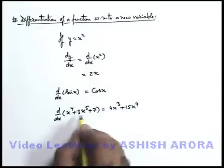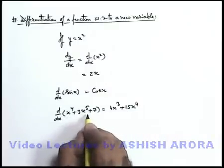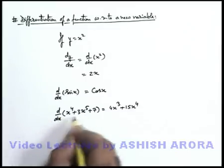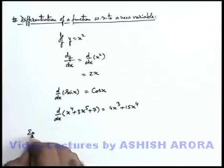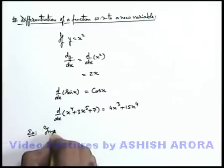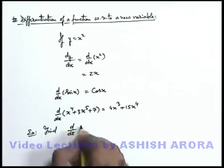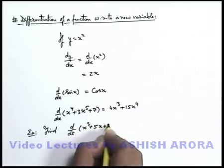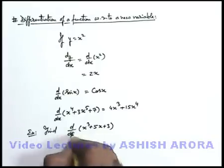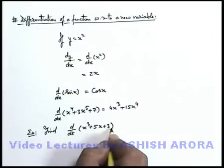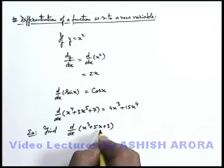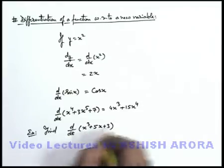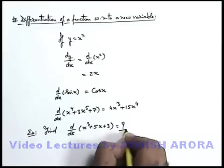The problem will arise when the given function is in terms of a variable x, and we are required to differentiate it with respect to some other variable. For example, if we are required to find d/dt of x³ + 5x + 3, we certainly cannot differentiate it directly because the function is in terms of x but we are required to differentiate with respect to t. Let's see how to evaluate it step by step.